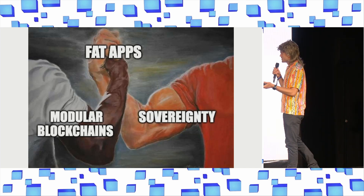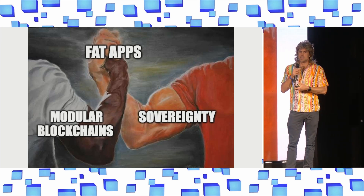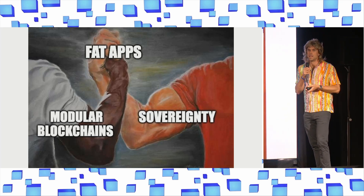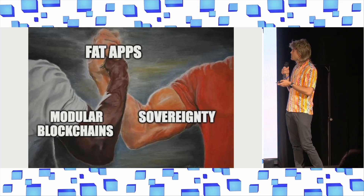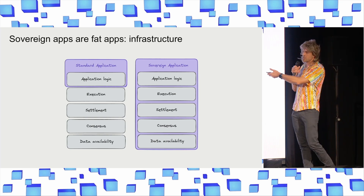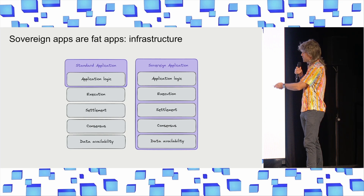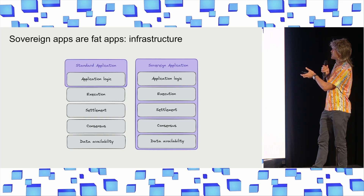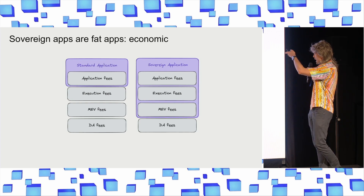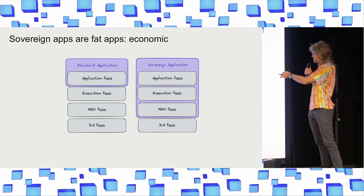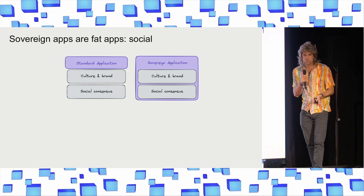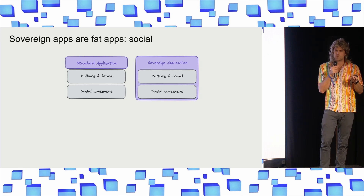So what's happening here is that modular blockchains and the sovereignty that they enable are teaming up to provide developers with the power to build sovereign, fat applications. And when I say sovereign apps are fat apps, I mean that in three specific ways. The first is that sovereign apps are fat apps from an infrastructure perspective — they don't just control their application logic like a smart contract, they have a say over every single component in the stack. Sovereign apps are also fat apps from an economic perspective — they're not just capturing application fees but capturing way more of this economic stack, the MEV fees and execution fees. And last but not least, they're fat apps from a social perspective — they own their own social layer and their own independent community and culture and brand.